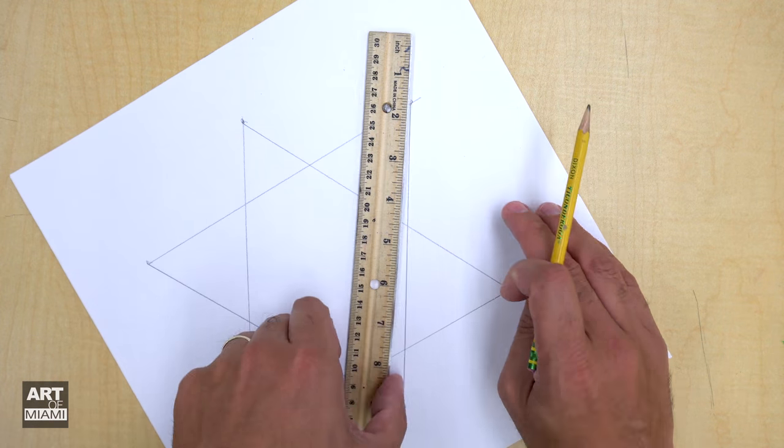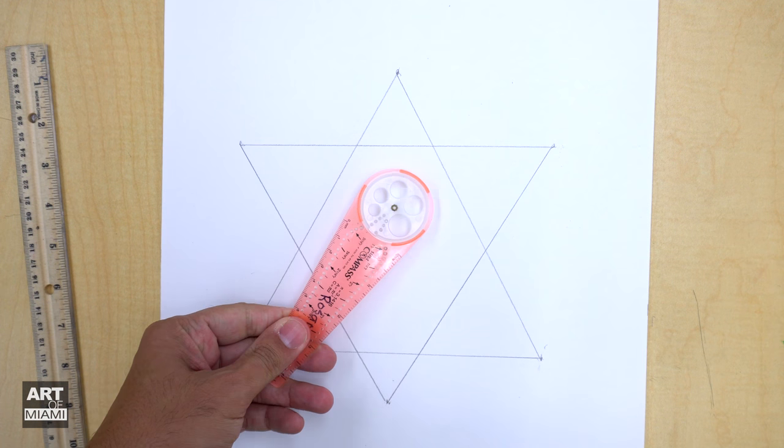Okay, hold the ruler tight, press soft. There we go. Now we have a six point star.